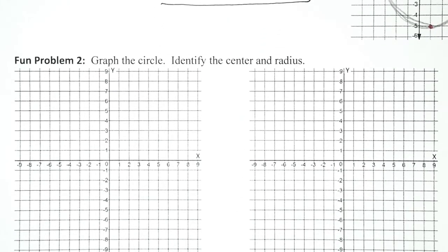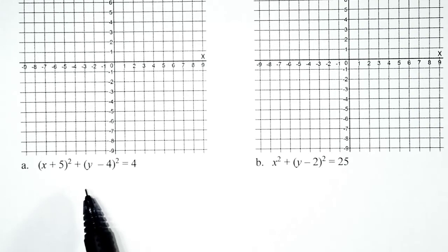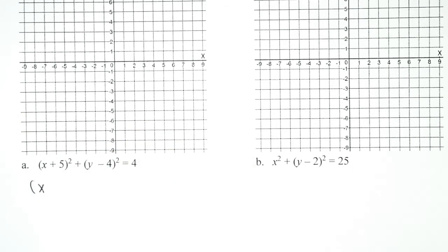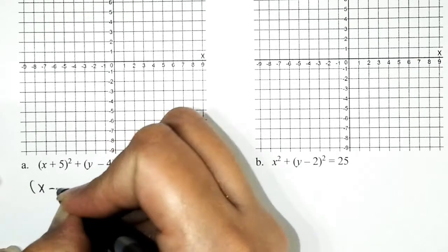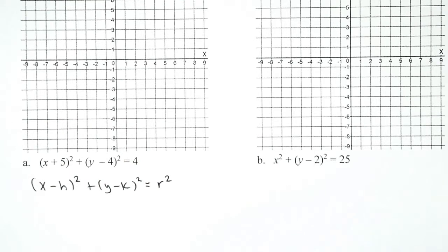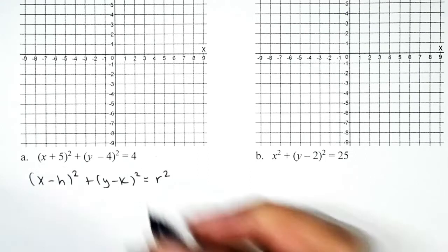Fun problem number two: graph the circle and identify the center and radius. The equation is given — we don't have to write it. To graph, we need to identify the center and radius first. A circle is in center-radius form if it looks like (x - h)² + (y - k)² = r². For the first binomial, I want to see x minus a number. If it's written as x + 5, I'll rewrite it as x - (-5). Subtracting negative five is still adding five, so it's the same thing.